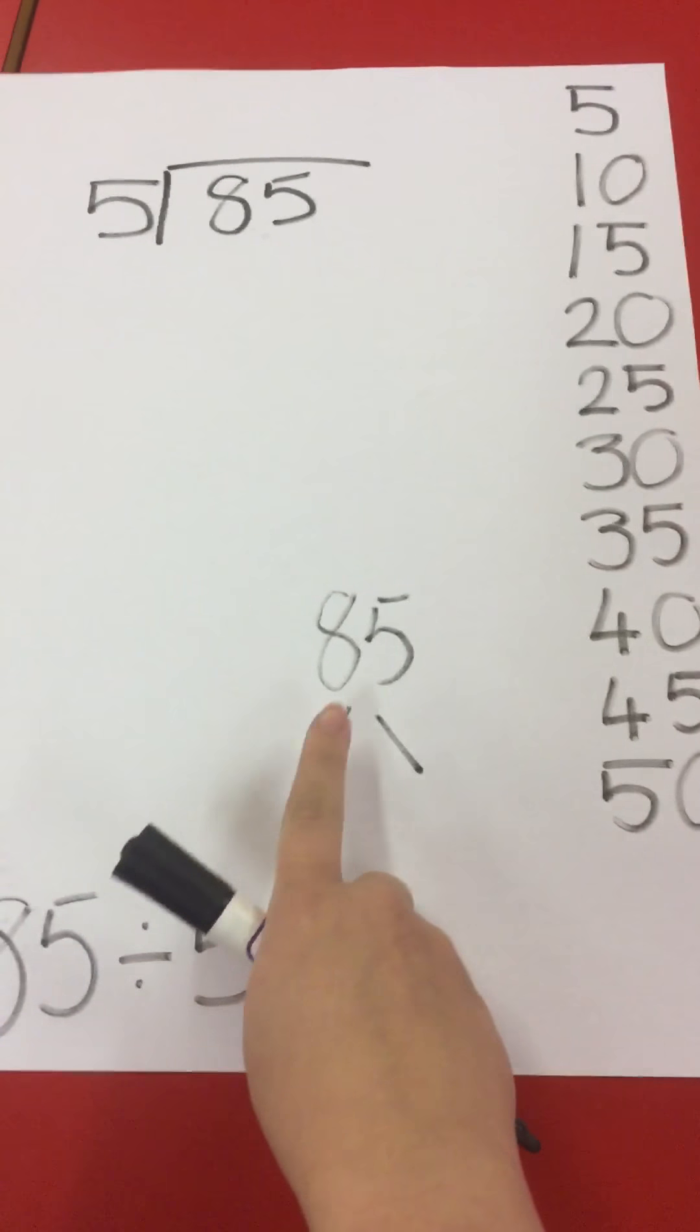The two numbers that I have chosen are 50 and 35. These two numbers add together to make 85 and they are both in my 5 times table.